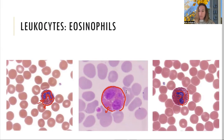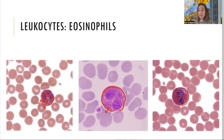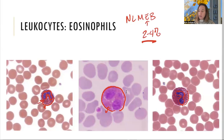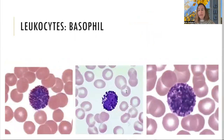Eosinophils are the only cells on a stained blood slide with red granules — that is their giveaway. Their job is also phagocytic, and they are found during allergic reactions, where they reduce inflammation. They are also elevated in parasitic infections. As far as numbers, they are two to four percent of all white blood cells.